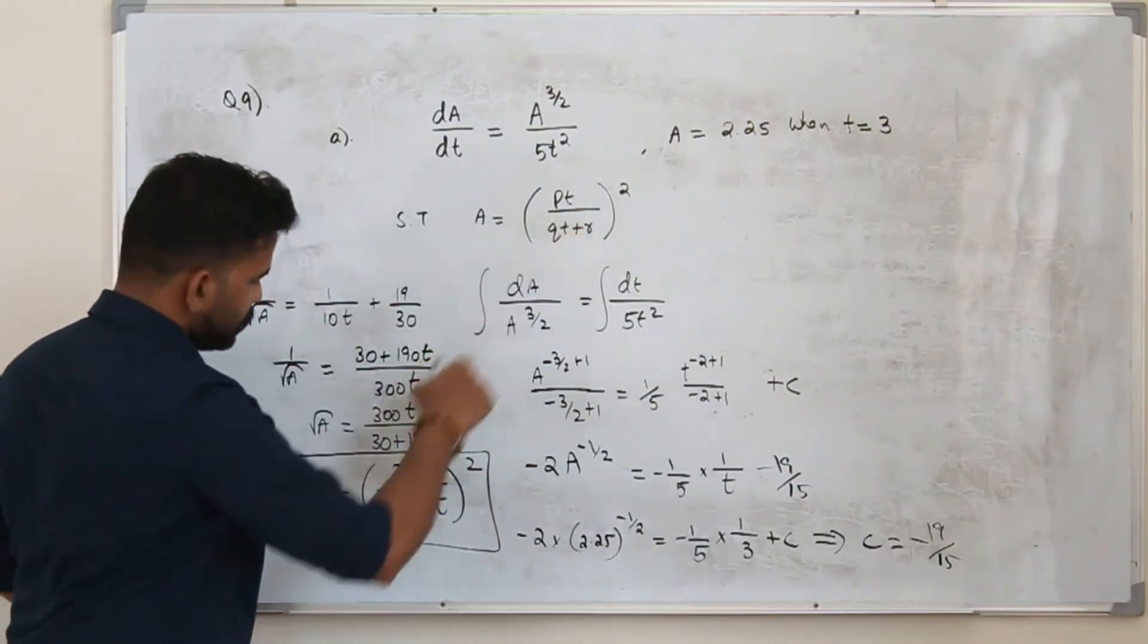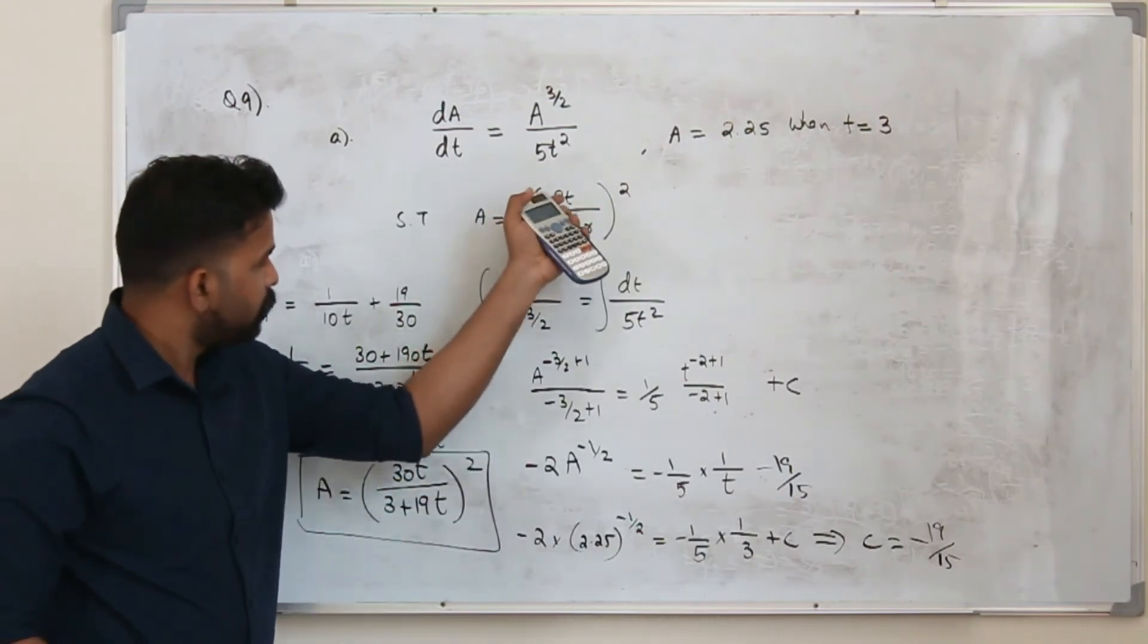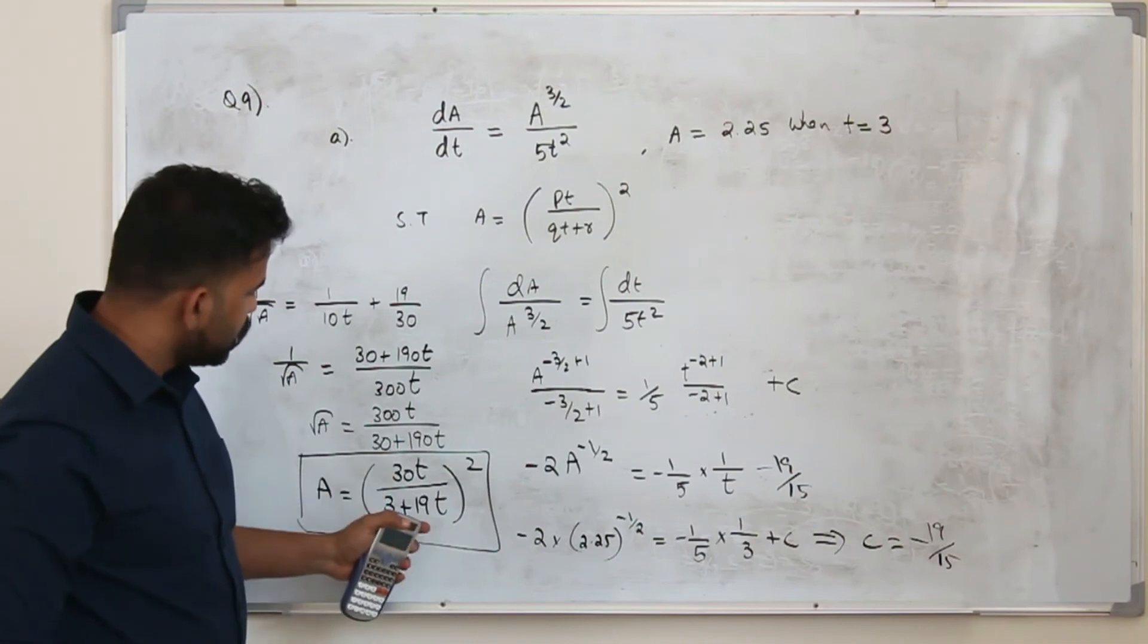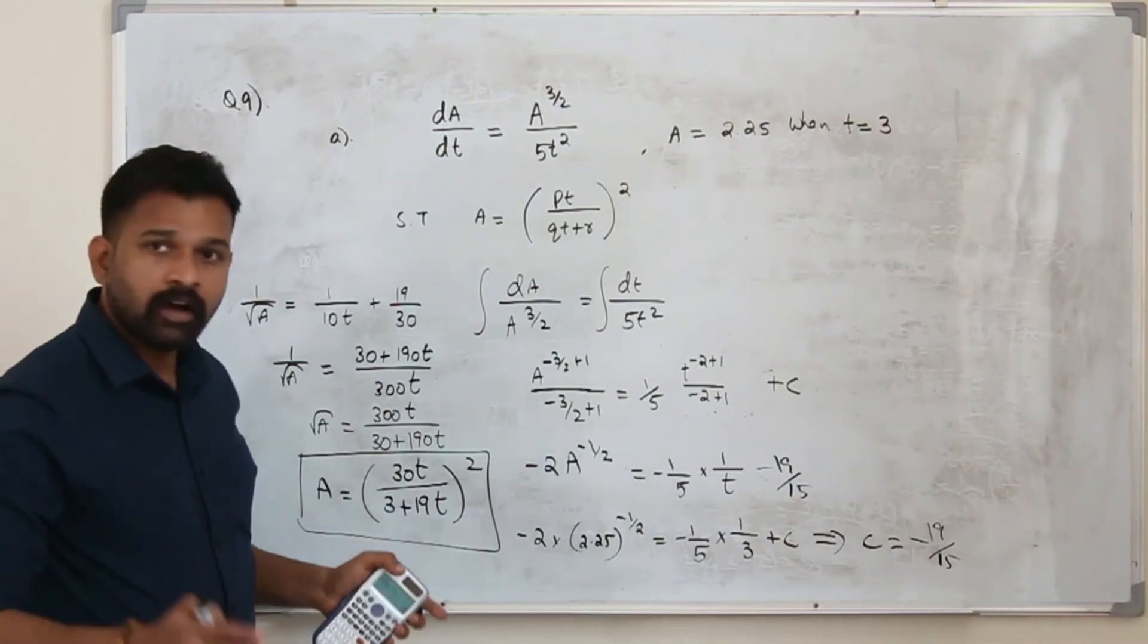Look at this. It's like pt in the form pt by qt plus r. Now p is 30, q is 19 and r is 3.